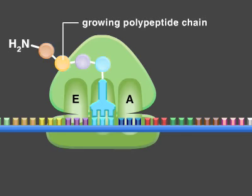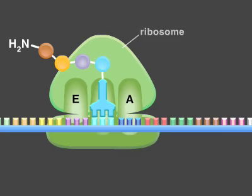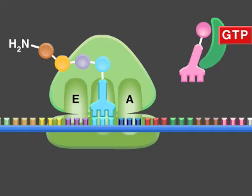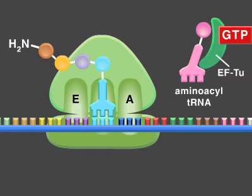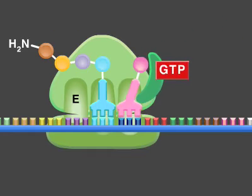To extend a growing polypeptide chain, the ribosome must select the correct amino acids that are specified by the messenger RNA. An aminoacyl tRNA bound to elongation factor TU, EFTU for short, enters the free A site on the ribosome.